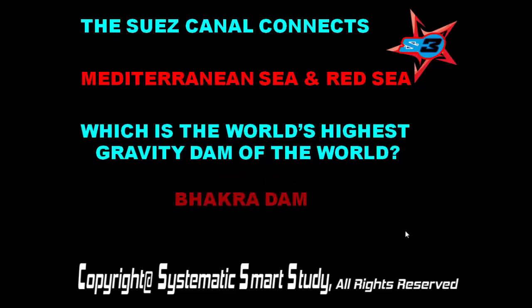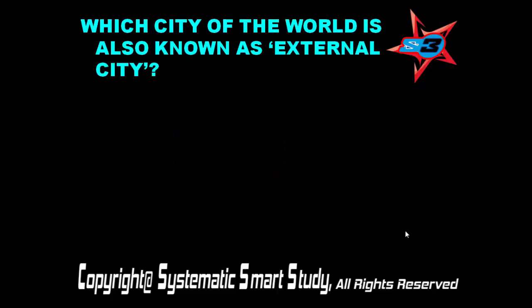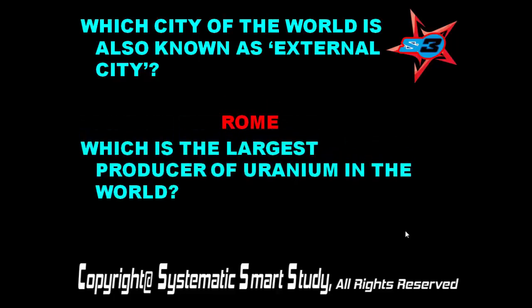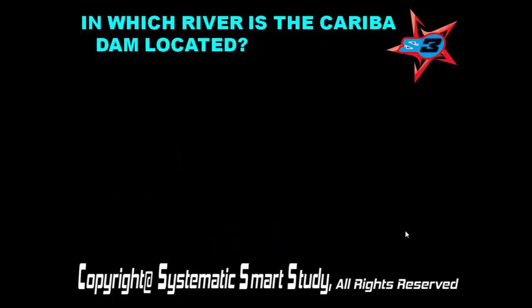Which is the world's highest gravity dam? Bhakra Dam. Which city of the world is also known as the Eternal City? Rome. Which is the largest producer of uranium in the world? Canada. In which river is the Kariba Dam located? The Zambezi.